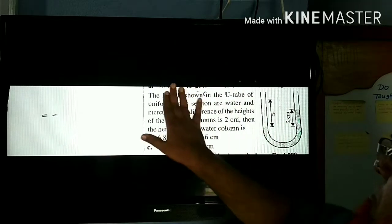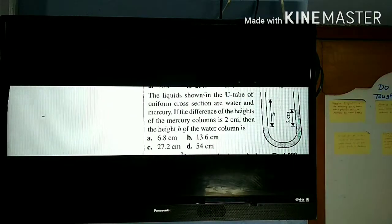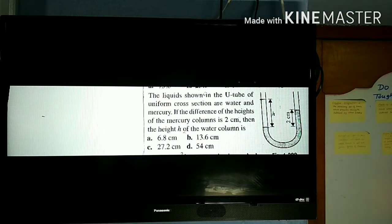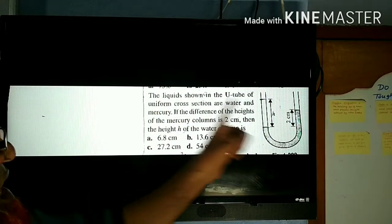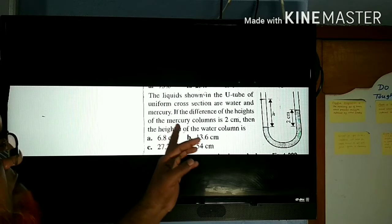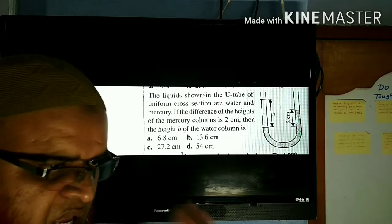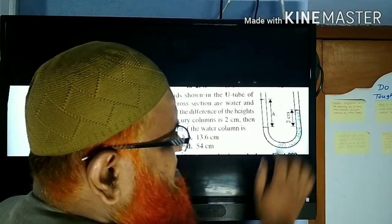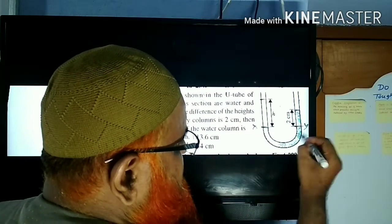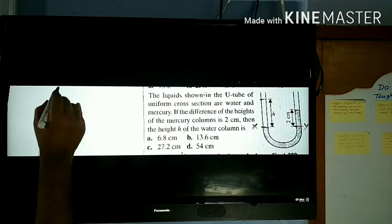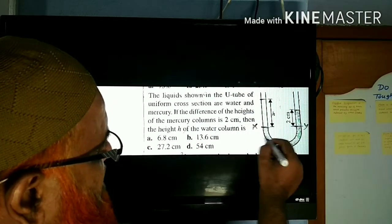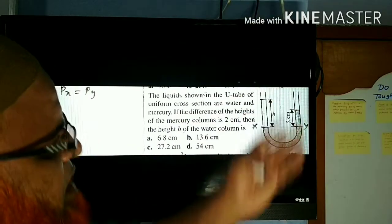Now let us go to the next problem. It is also a very easy problem. Liquids are mercury and water — density of mercury is 13.6 and water is 1. He is asking us to find the height of the water column. I told you to hold the smallest interface level. Among these two, this is the lowest interface level — consider this as X and this as Y. So P_X = P_Y.